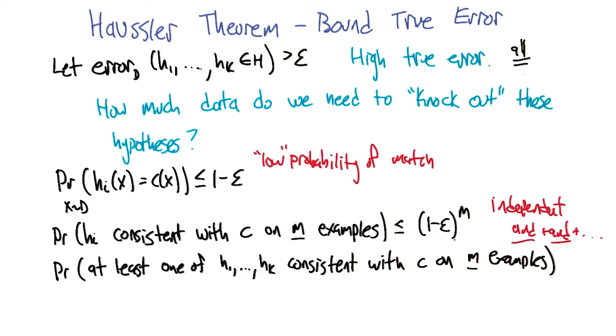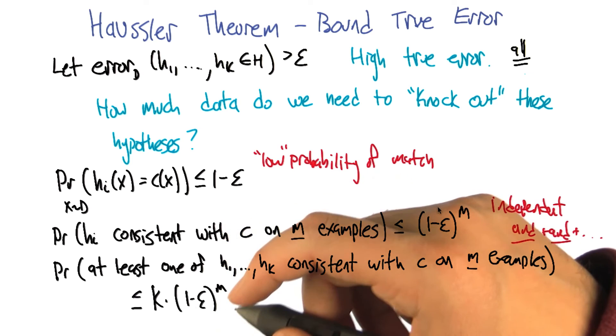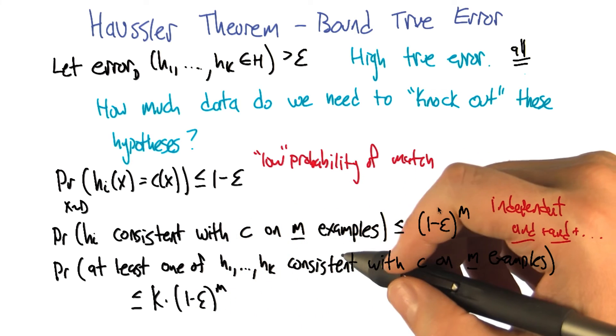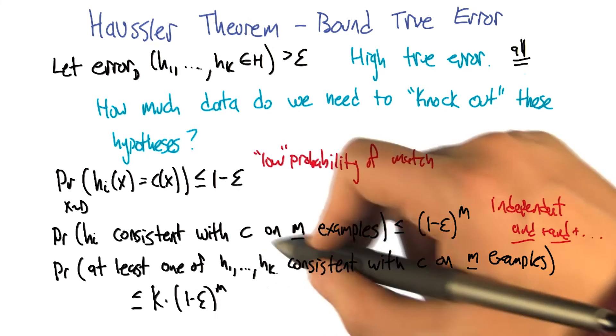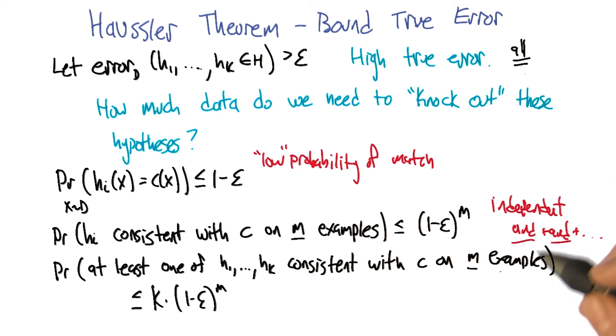So just like you did before and did multiplication, another way of writing at least one of is to say or. So h1 or h2 or h3 or h4, or hk is consistent. And just like and is multiplication, or is addition. That's true. And there are k different ones of these, so I have to say this (1 minus epsilon) to the m, plus (1 minus epsilon) to the m, plus (1 minus epsilon) to the m, k times. So that would be (1 minus epsilon) to the m times k. Great. So that is a bound on the probability that at least one of these bad hypotheses is going to remain in the version space even after m examples.